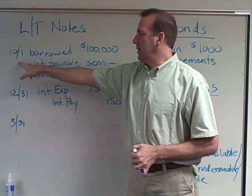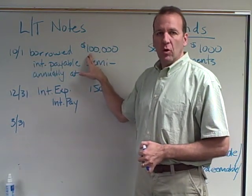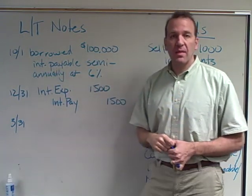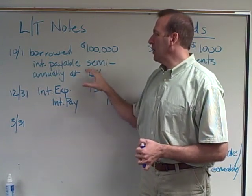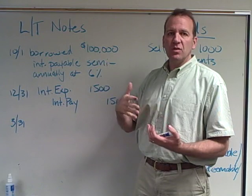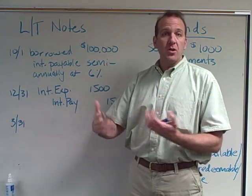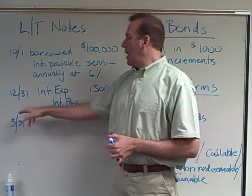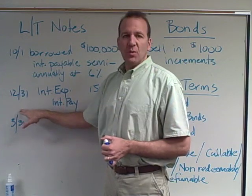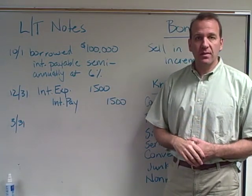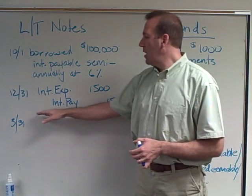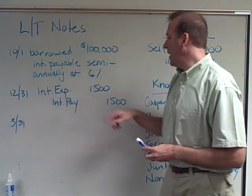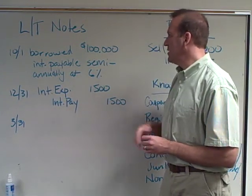In this example, we're borrowing $100,000 on October 1st. Interest is payable semi-annually — every six months — at six percent. We're not looking at paying back the note principal right now; maybe it's due five years from now. On December 31st, we have to do an adjusting entry. We're not actually paying any interest at this point, but since it's year-end, we need to record the adjusting entry.